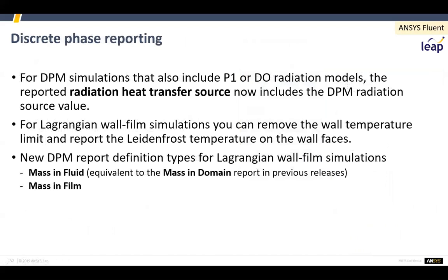For those using particles, something long awaited: when you look at radiation balances, the radiation heat transfer contribution from the particles will now be included, so you'll be able to really check those balances properly. You can also set a Leidenfrost temperature at the wall, so when particles are forming a film, that film can disappear at the Leidenfrost temperature. There's also clearer reporting of how much particle mass is in the fluid domain versus the film domain.